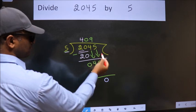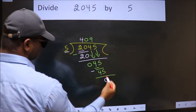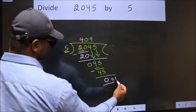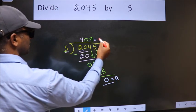No more numbers to bring down. So we stop here. This is our remainder. This is our quotient.